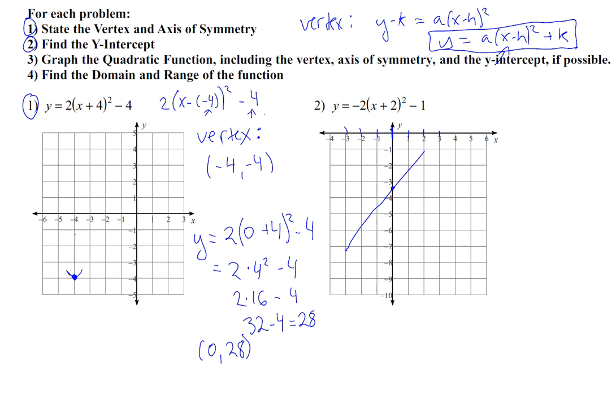Obviously I can't put that on my graph because this graph is only showing going up to 5. You were supposed to find the y-intercept, so we found that — that's what the y-intercept is. But it's not going to help us with our graph, so let's find one more point on the parabola so that I can get a more accurate graph.